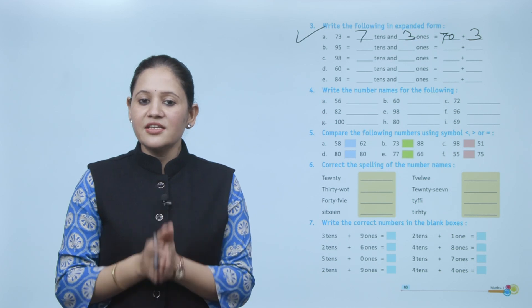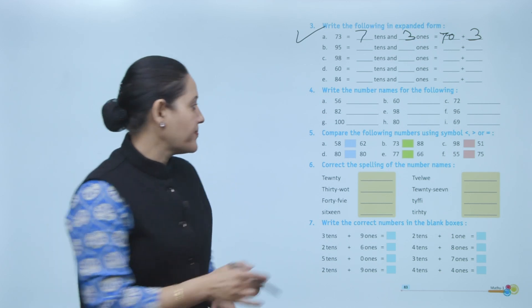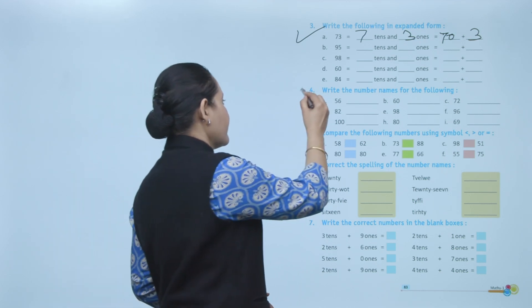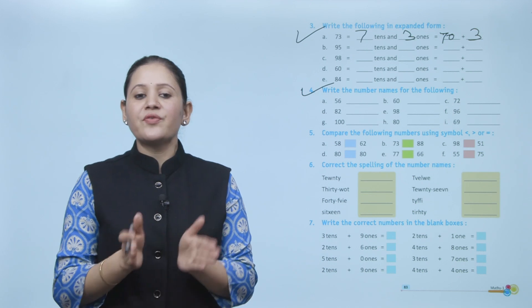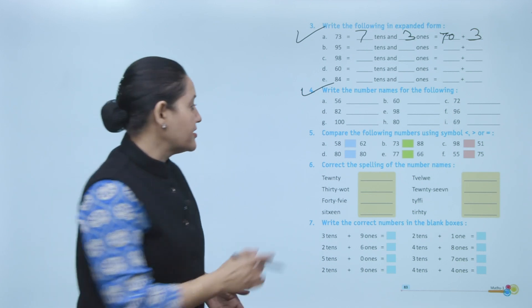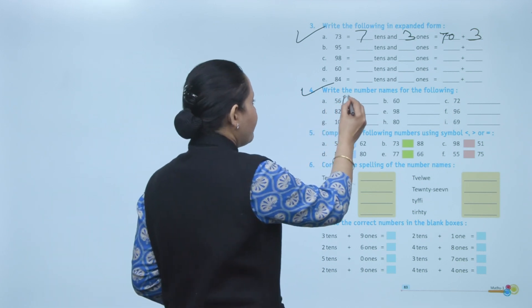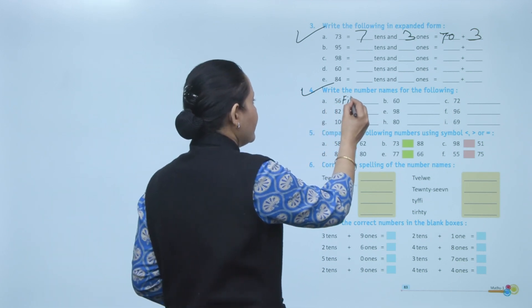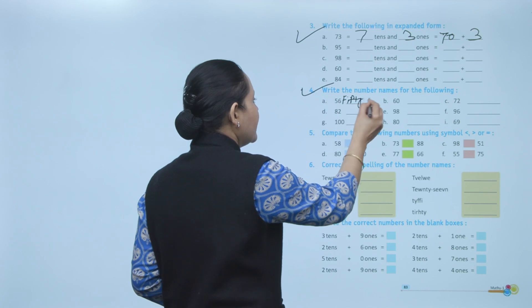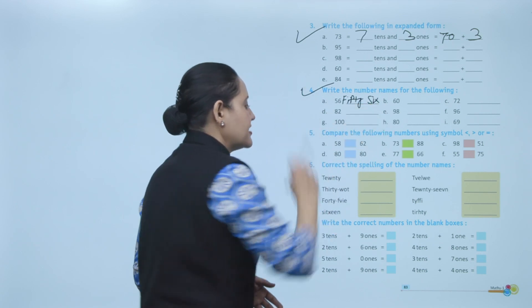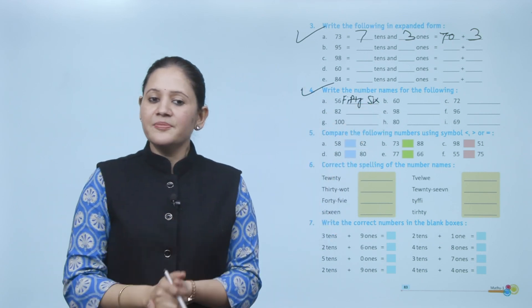Next, write the number name for the following. First is 56. We will write F-I-F-T-Y S-I-X.